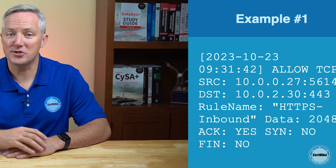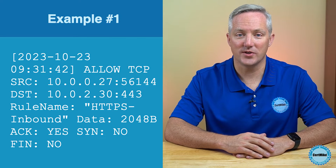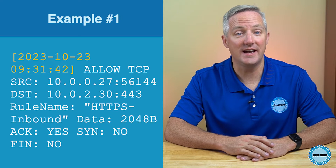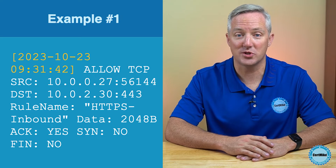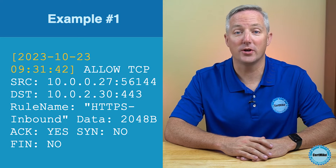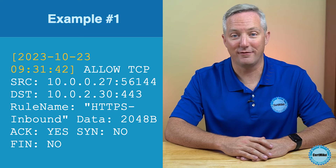Let's take a look at two different examples of firewall log entries and figure out what they mean. These logs might look confusing at first, but they're pretty straightforward to interpret once you get the hang of it. Here's the first log entry. Let's walk through each section. First, we have the timestamp of the event — the date and precise time when the log entry was created. This specific timestamp tells us that the event occurred on October 23, 2023, at 9:31 and 42 seconds.